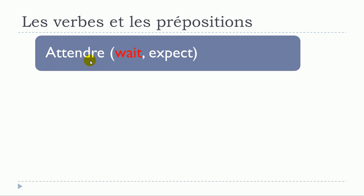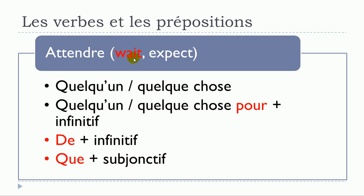Next verb: attendre. It can mean 'to wait' or 'to expect'. For the 'wait' meaning: first structure — no preposition — attendre quelqu'un or quelque chose. Second structure: attendre quelqu'un or quelque chose pour + infinitif. Third: attendre de + verb à l'infinitif. And: attendre que + verb au subjonctif — be careful, the verb should be at the subjonctif.